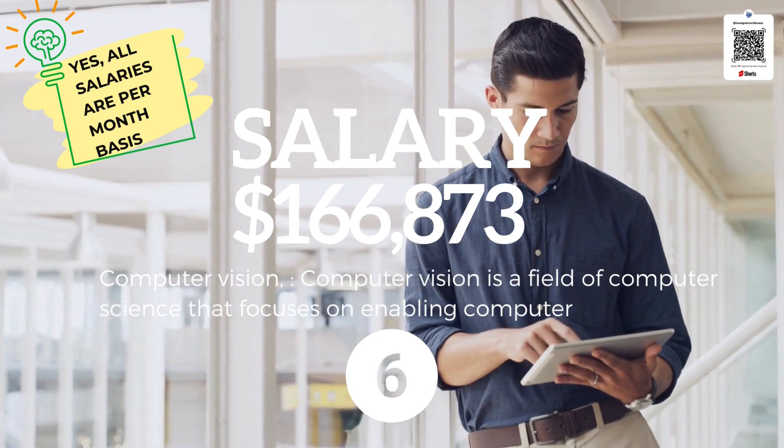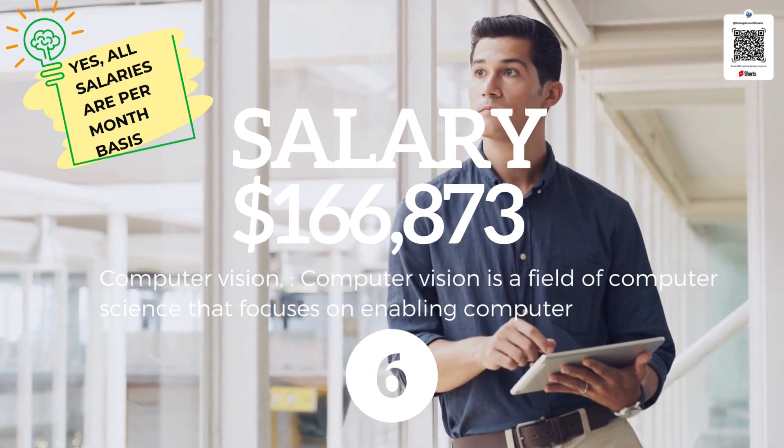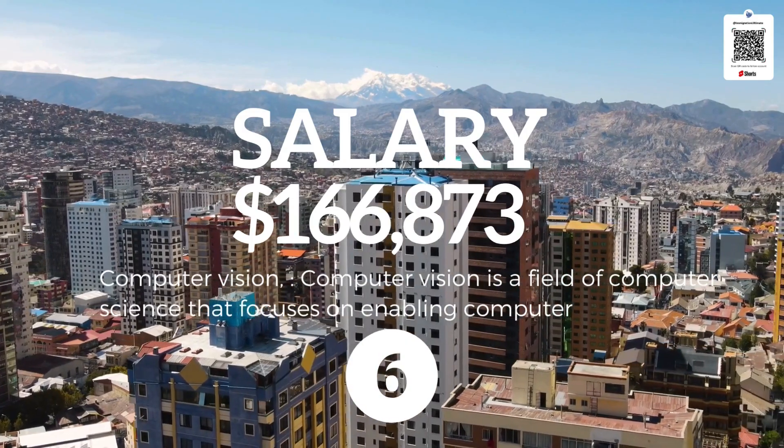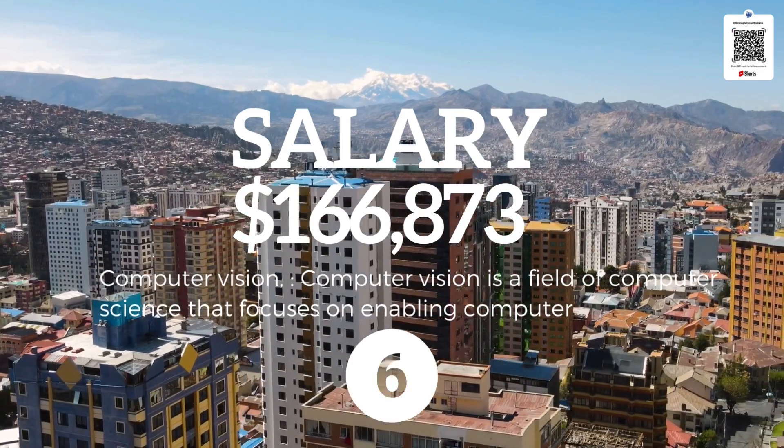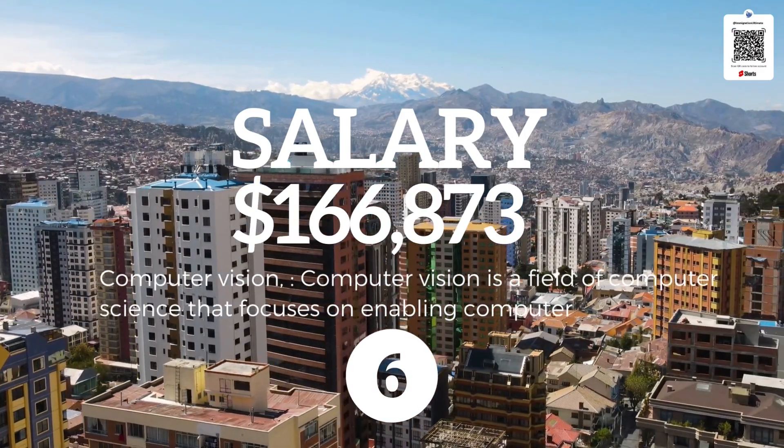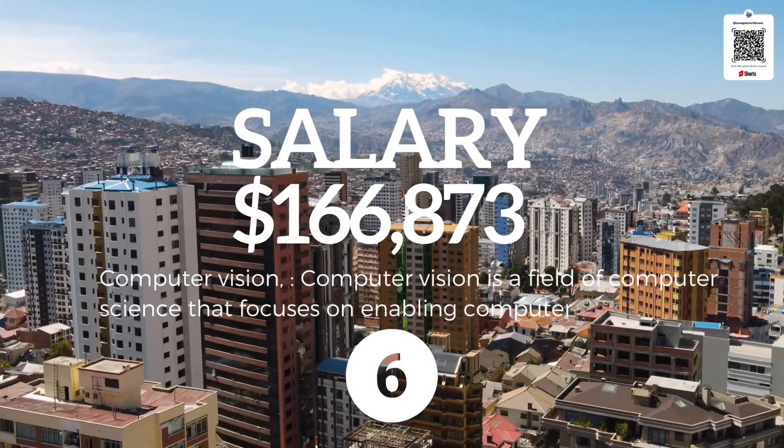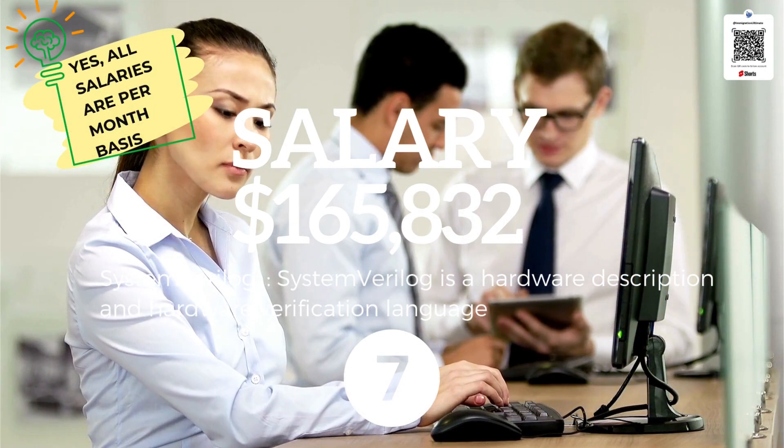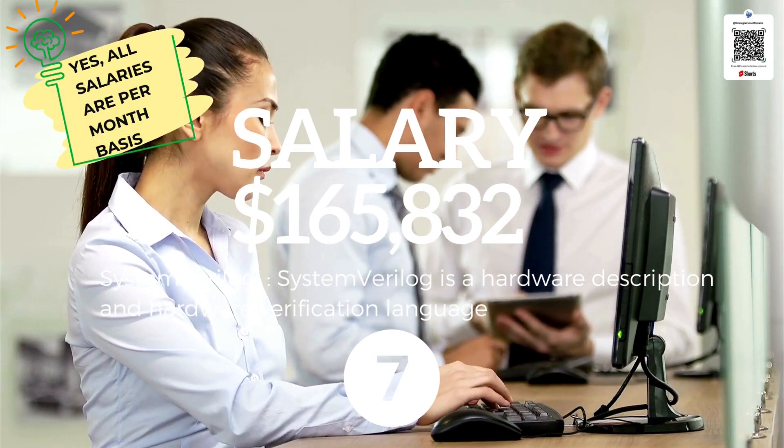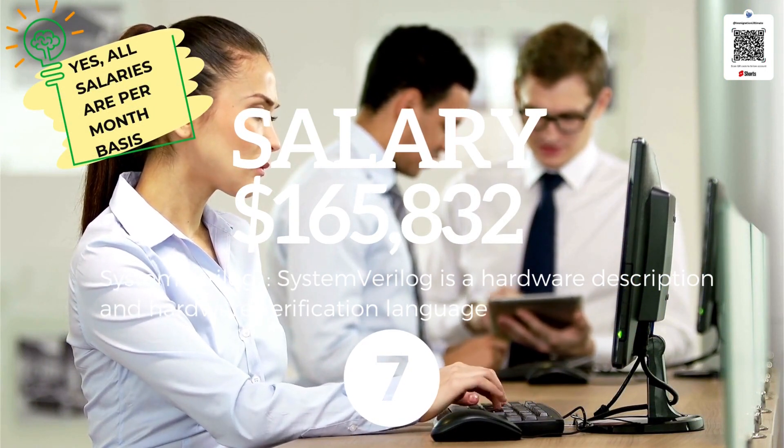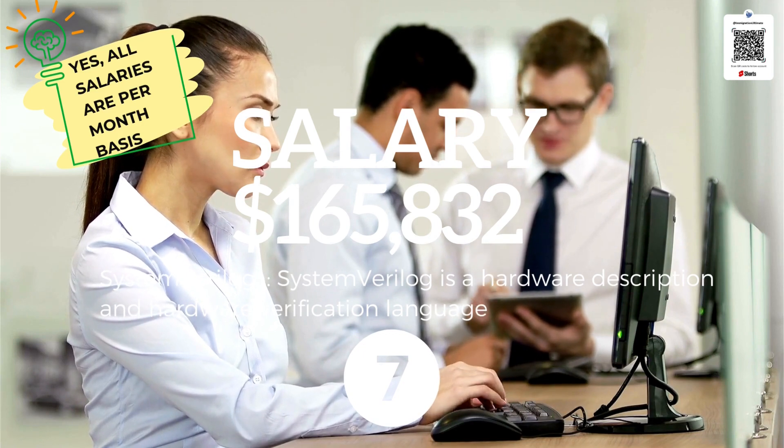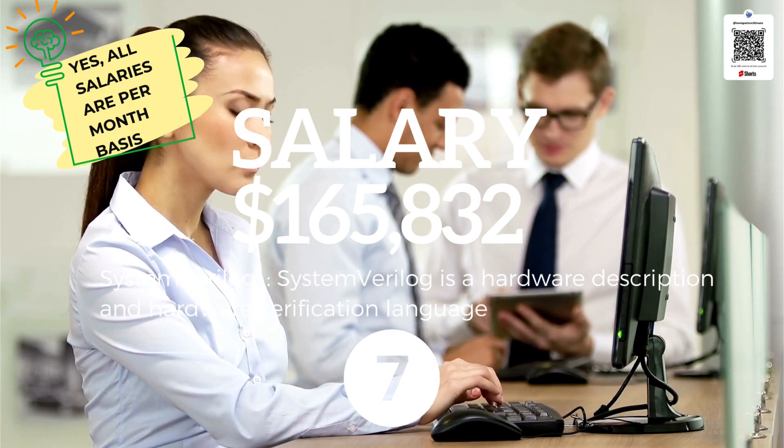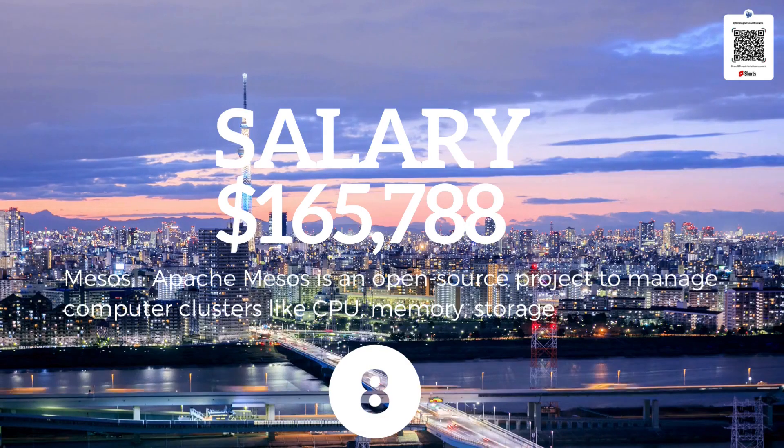Number six is Computer Vision at $166,873. Computer vision is a field of computer science that focuses on enabling computers to identify and understand objects and people in images and videos. Number seven is System Verilog at $165,832, a hardware description and hardware verification language used to model, design, simulate, test, and implement electronic systems.